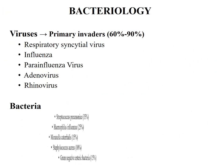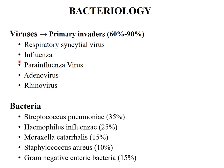Bacteriology. Usually it starts as a viral infection — the primary invaders being respiratory syncytial virus, influenza, parainfluenza virus, adenovirus and rhinovirus. When secondary bacterial invasion occurs, the most common is Streptococcus pneumoniae, followed by Haemophilus influenzae, Moraxella catarrhalis, Staphylococcus and other gram-negative enteric bacteria.